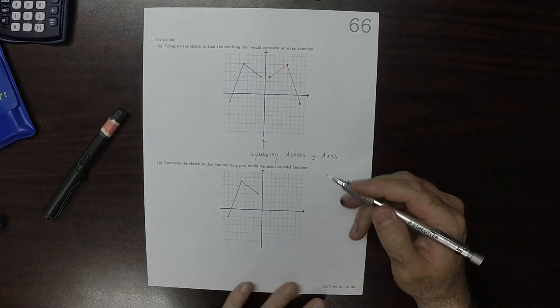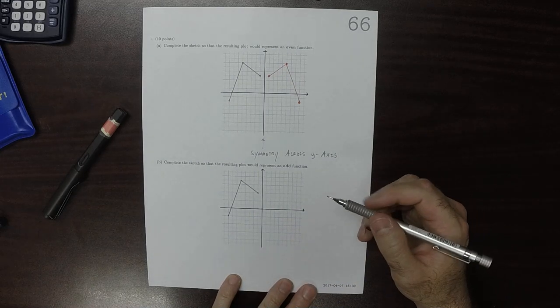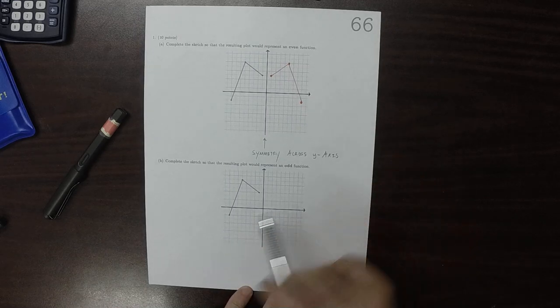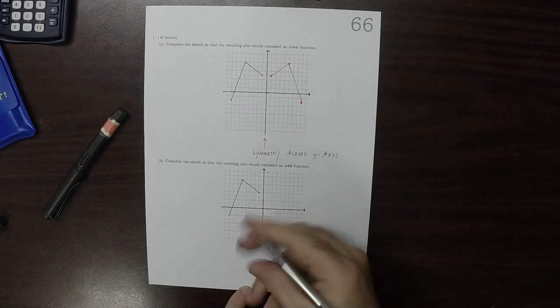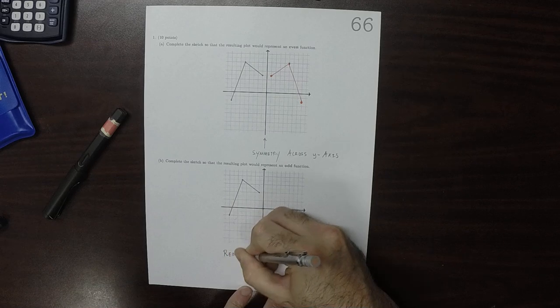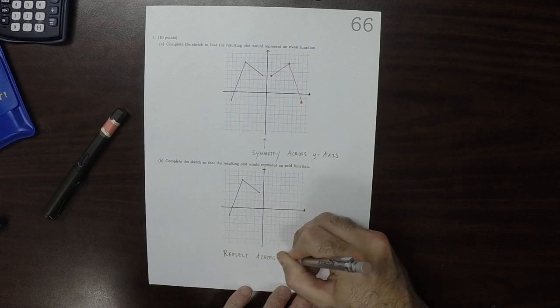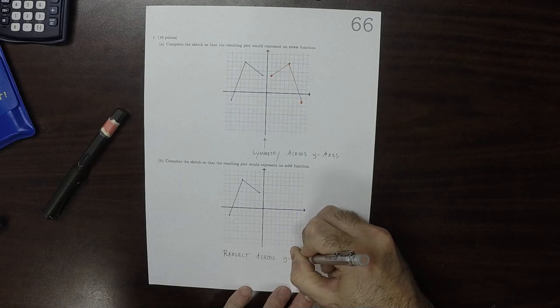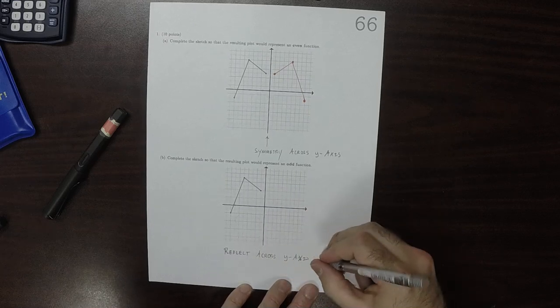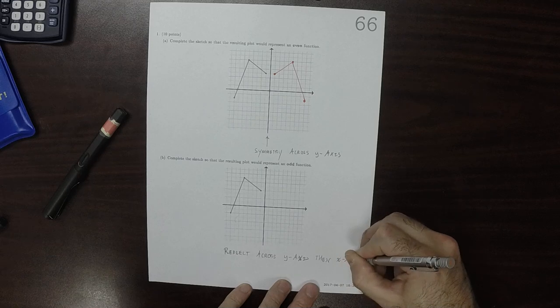So for an odd function, what we want to do is we want to have symmetry across both. That is to say, we want to reflect across the y-axis and then the x-axis. So we're going to perform two reflections.